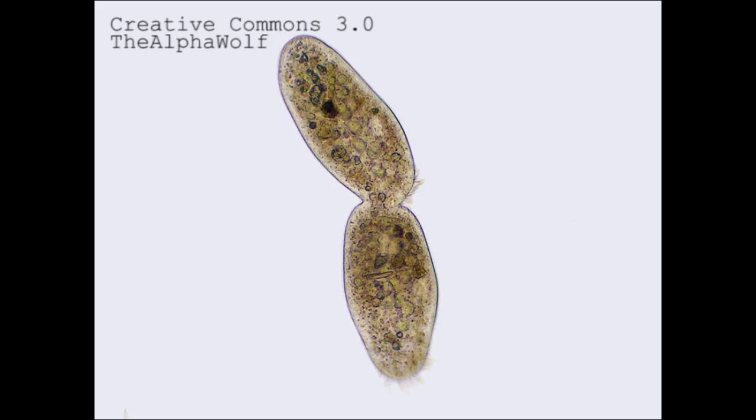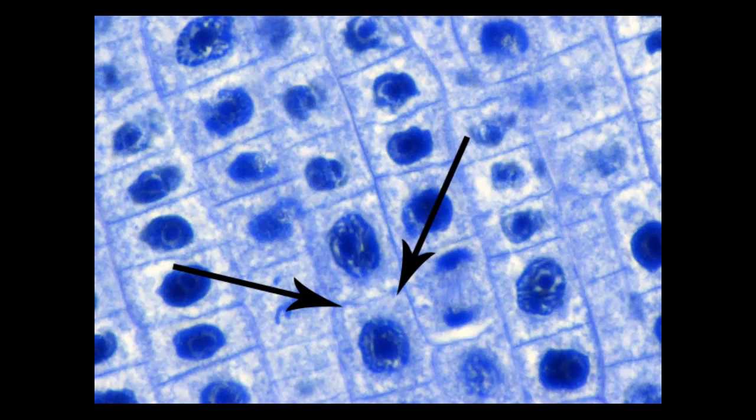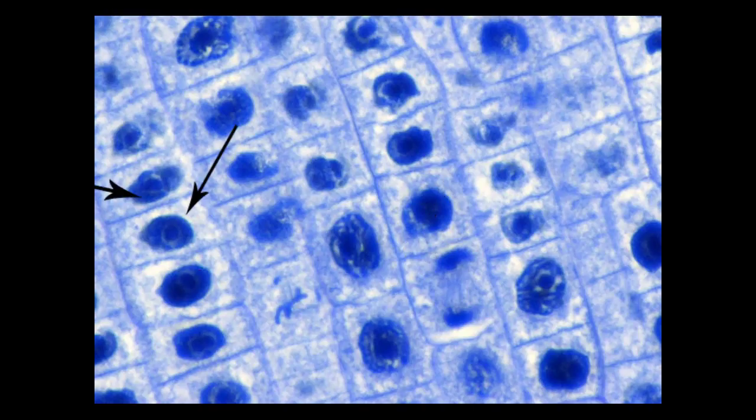In plant cells, cytokinesis begins with the formation of the phragmoplast and ends when the mother cell becomes two daughter cells.